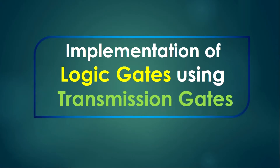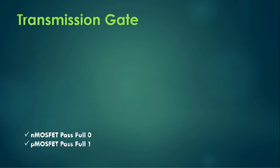Hello everyone, welcome to this video. In this video let's understand the implementation of logic gates using transmission gates. First, let us understand what is a transmission gate. A transmission gate is a MOSFET device having an N MOSFET as well as a P MOSFET. The two transistors are connected in parallel.